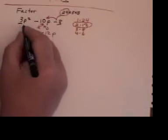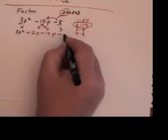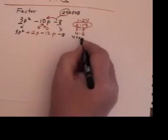Now I bring this down. That's 3p squared. Bring the last term down, minus 8. So now I have my 4 terms.